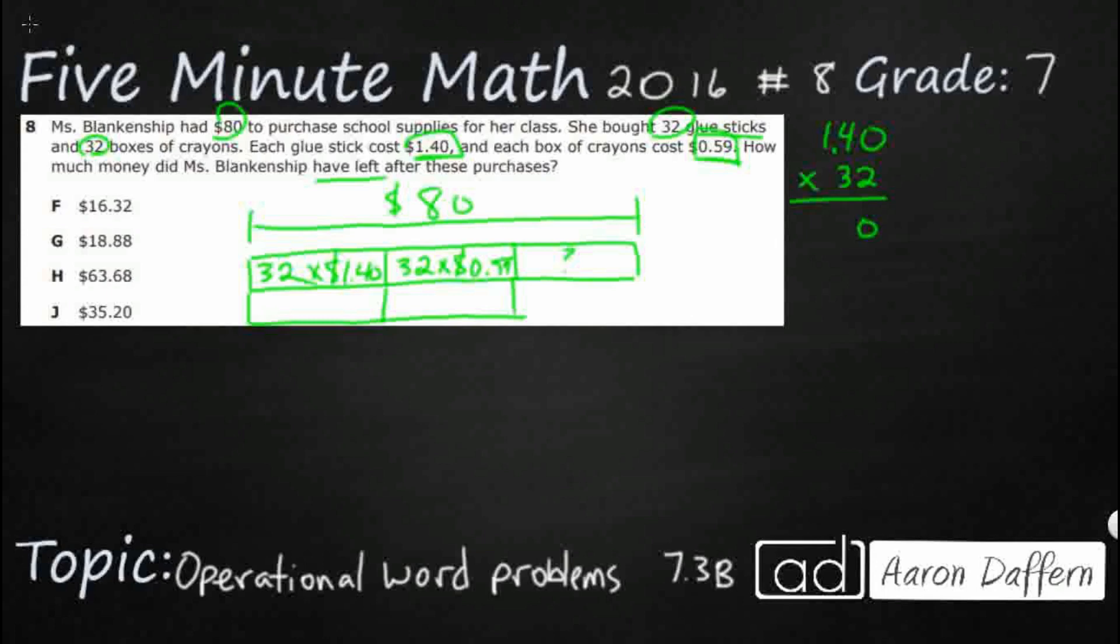2 times 0 is 0. 2 times 4 is 8. 2 times 1 is 2. Let's bring that 0 in. 3 times 0 is 0. 3 times 4 is 12. 3 times 1 is 3. Add that 1. Let's add that up. 0, 8, 4, 4.